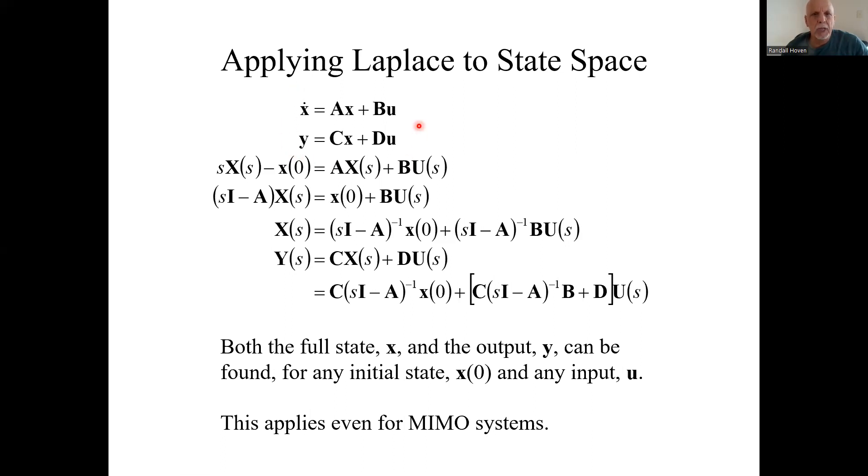Here's the state space representation of a control system. u is the input, y is the output, x is the state. A, B, C, and D are matrices.